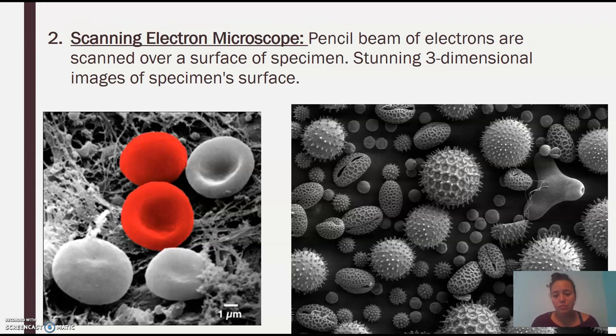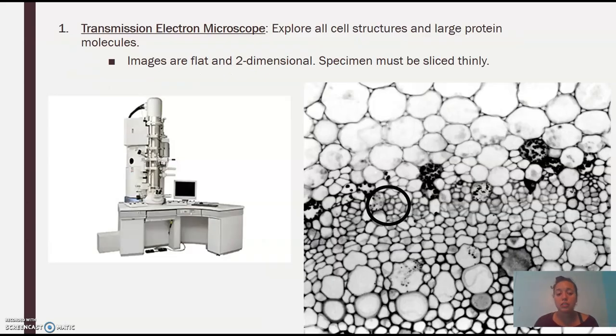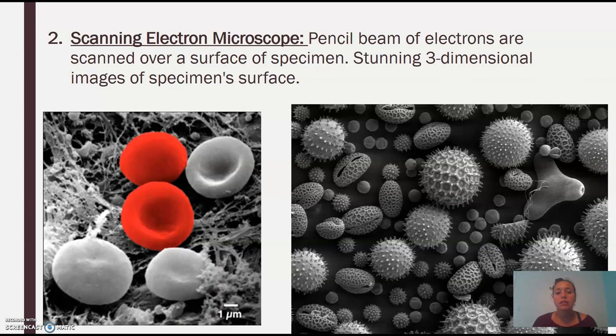The electron's my favorite. It's beautiful pictures. A little small pencil beam. The machine looks the same. So it looks just like that. This tiniest pencil beam of electrons scans over the surface of the specimen. And you get this beautiful three-dimensional image. So this is a blood cell. These are viruses and other cells in the body.